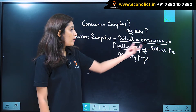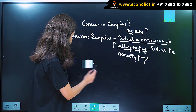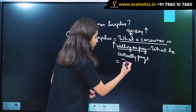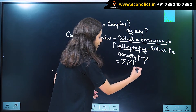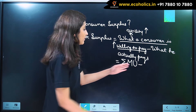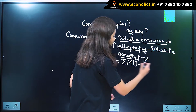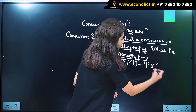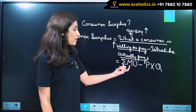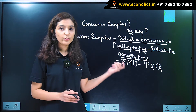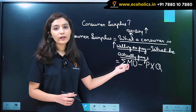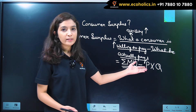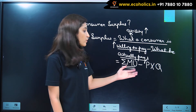So how do we represent what a consumer is willing to pay? This is simply equal to the summation of marginal utility minus what he actually pays, which is nothing but price multiplied by the number of units. The total utility derived from consuming a commodity will be the summation of MU, and what he pays will be simply price multiplied by quantity. So this is one formula.